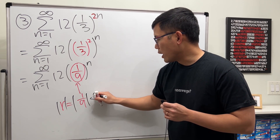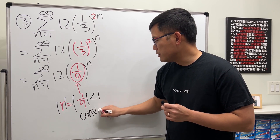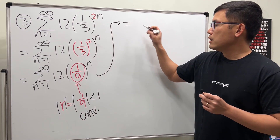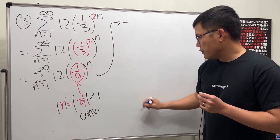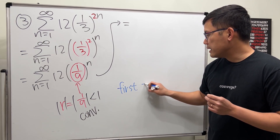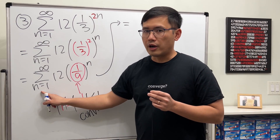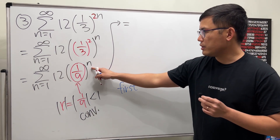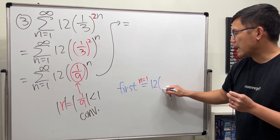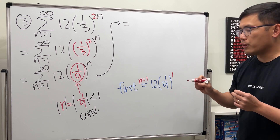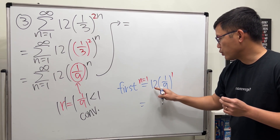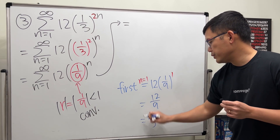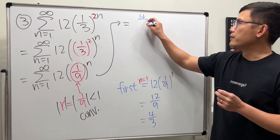The absolute value of one over nine is indeed less than one, therefore we know this geometric series converges and we can proceed. We need to find the first term. Since n starts at one, we plug in n equals one: we get twelve times one over nine raised to the first power, which is twelve over nine. Reduced by three, that gives four over three as the first term.